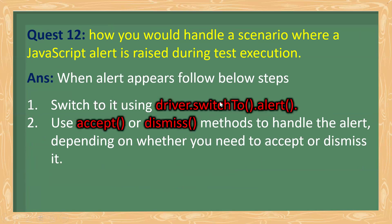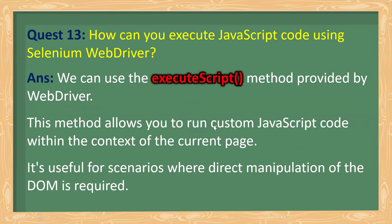How would you handle a scenario where a JavaScript alert is raised during automation? When an alert appears, you can switch to it using driver.switchTo().alert(), and then call either the accept method or the dismiss method depending on whether you need to accept or dismiss the alert.